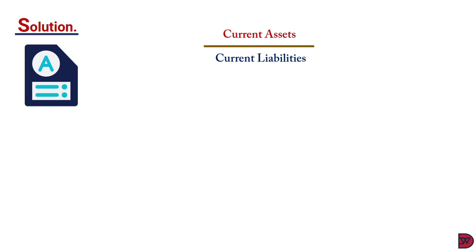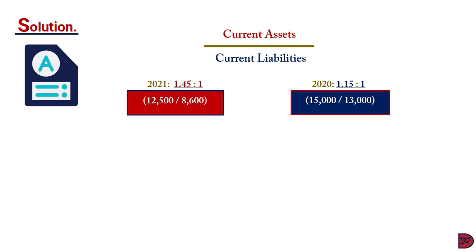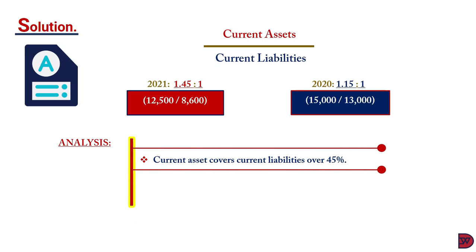When we come to the solution, we'll restate the formula for current ratio, which is the current assets divided by the current liabilities. For 2021, the current ratio will be 1.45:1. This was found by dividing the current asset of $12,500 by the current liabilities of $8,600. For 2020, the current ratio gives us 1.15:1, also found by dividing $15,000 of current assets by $13,000 current liabilities.